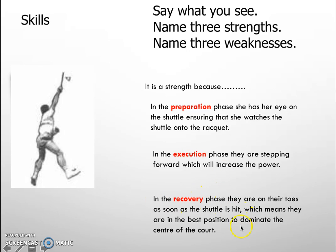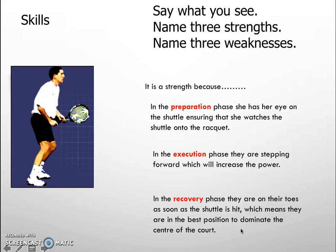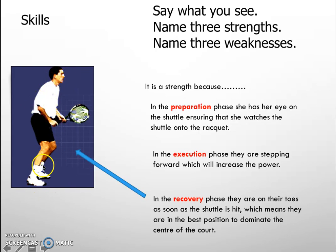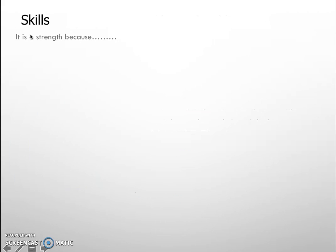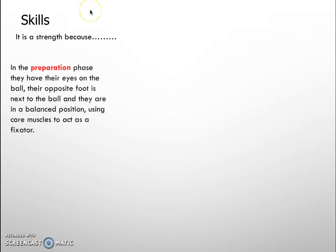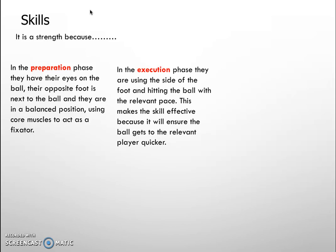In the recovery phase they are on their toes as soon as the shuttle is hit, which means they're in the best position to dominate the centre of the court. You can see they've returned to that ready position — very familiar to anyone who plays badminton. So the key components are preparation, execution, and recovery of the specific skill.